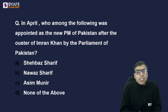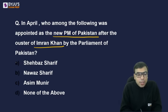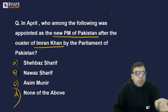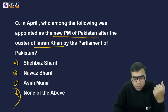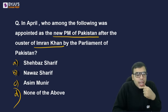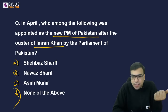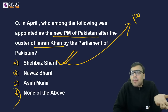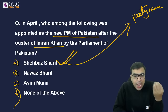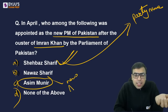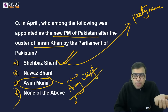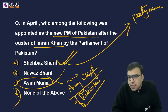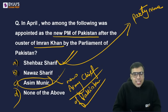In April, who was appointed as the new Prime Minister of Pakistan after the ouster of Imran Khan by Parliament? A no-confidence motion was passed against Imran Khan and he was removed. The new Prime Minister of Pakistan is Shahbaz Sharif. Homework: find out his political party's name. Also, General Asim Munir is the new Army Chief of Pakistan, appointed recently — before him, General Bajwa was the Army Chief.